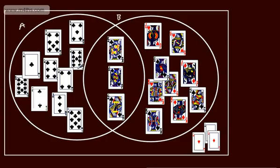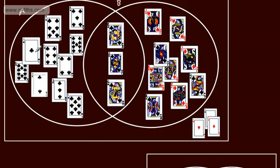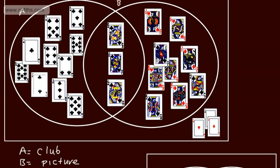Here's a Venn diagram. Event A is drawing a club — so in A, I've put all of the clubs. Event B is drawing a picture card. So in A, we've got all of the numbers and then the picture cards. In event B, we're choosing a picture card. Outside this represents everything that's left.